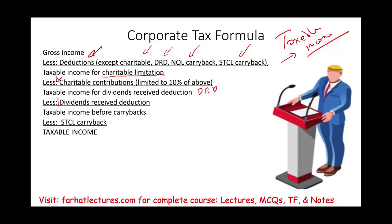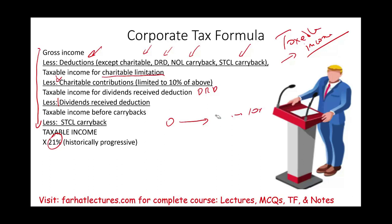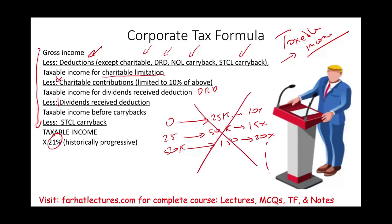Notice how taxable income was created from gross income. From taxable income, we multiply by 21%. Historically, the corporate tax rate was progressive — for example, income between $0 and $25,000 might be taxed at 10%, the next bracket at 15%, then 20%, and so on. That is no longer the case. With the Tax Cuts and Jobs Act, we now have one flat tax rate of 21% for all corporations.